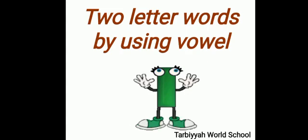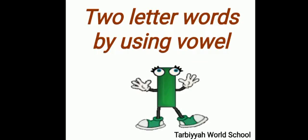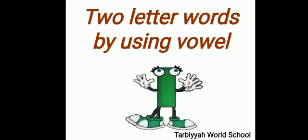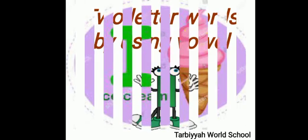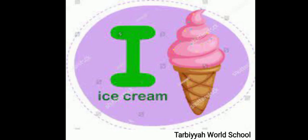Let's see some words that beginning with the letter I. I is for ice cream. You have to repeat with me: I is for ice cream.